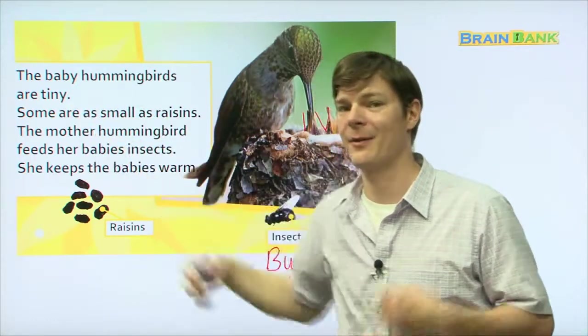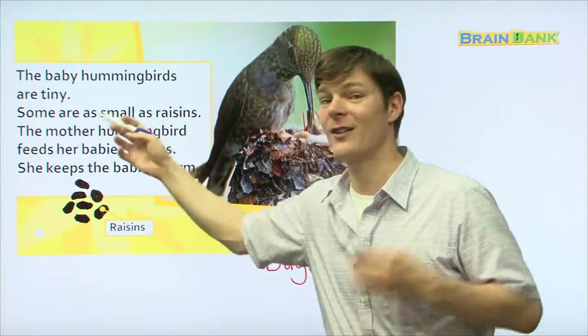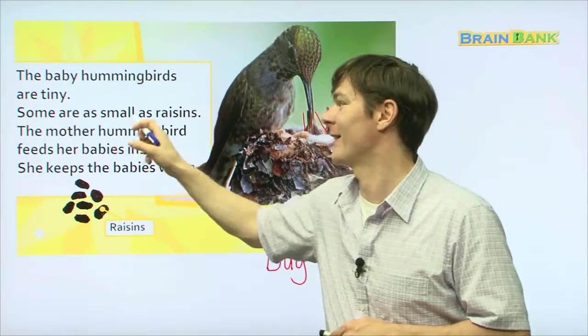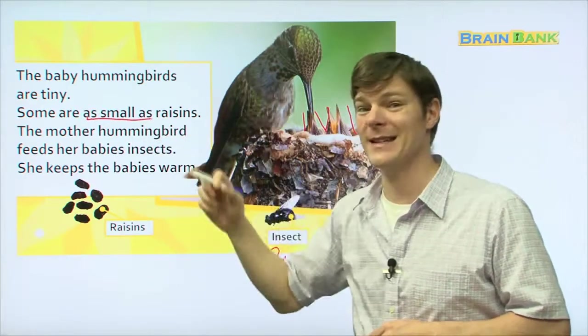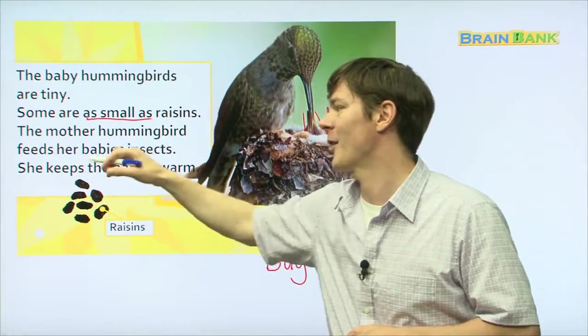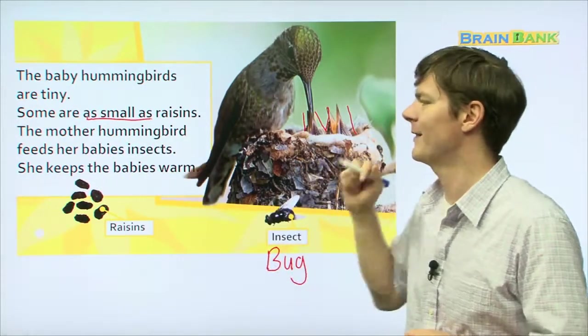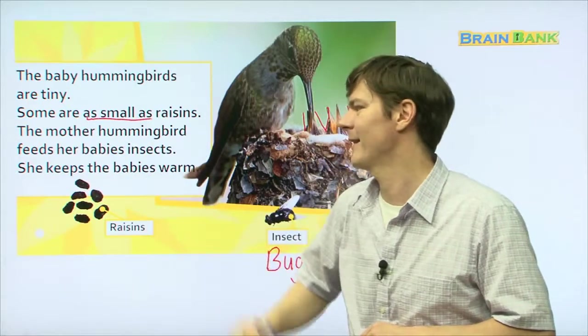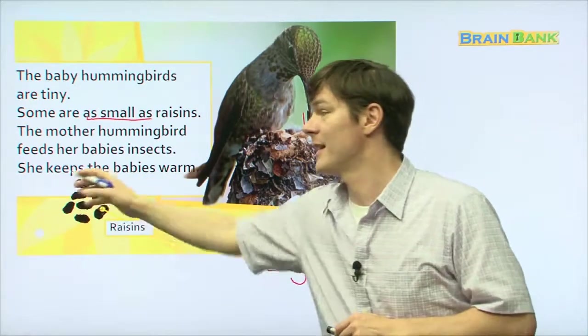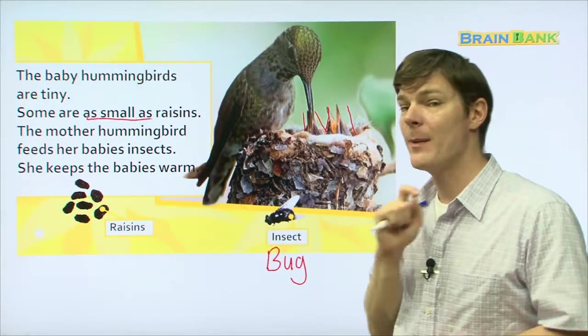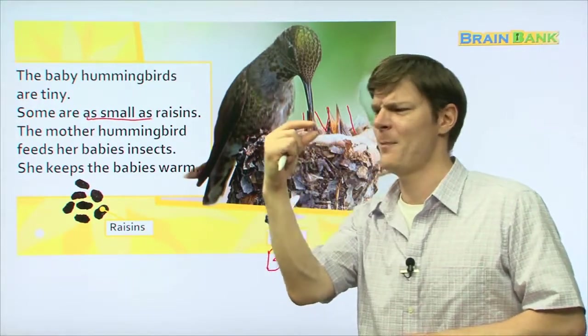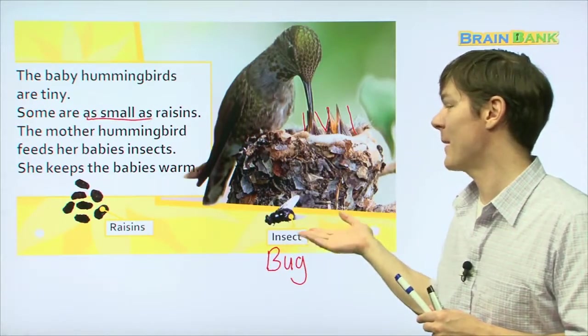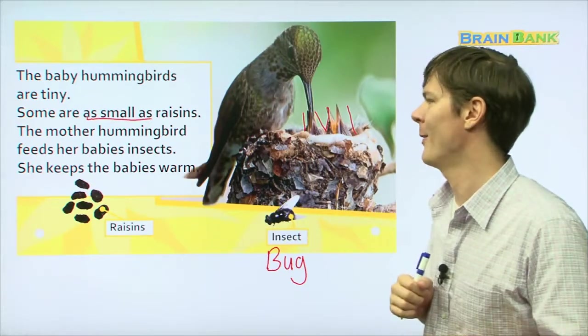The baby hummingbirds are tiny. Everyone repeat after me. The baby hummingbirds are tiny. Some are as small as raisins. Everyone read with me. Some are as small as raisins. The mother hummingbird feeds her babies insects. She's feeding the insects to the baby. Everyone read with me. The mother hummingbird feeds her babies insects. She keeps the babies warm. She keeps the babies warm. So, the baby hummingbirds are as small as raisins. That's like that big. The cap of this pin is bigger than the babies. And she's feeding the babies these insects and keeping them warm. What a great mother.